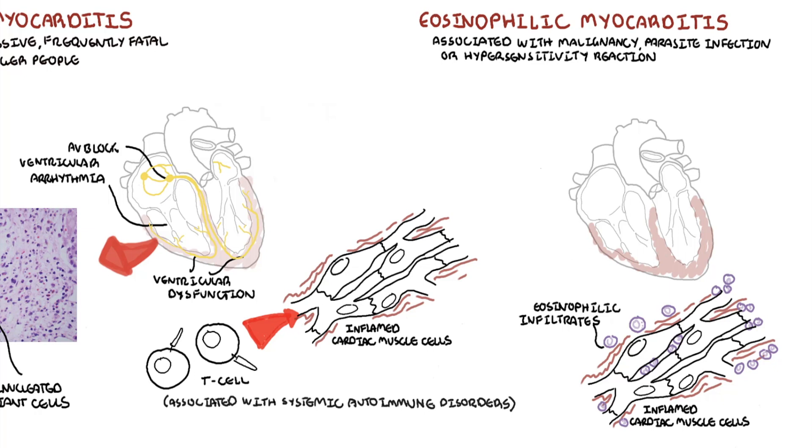Eosinophilic myocarditis is fatal and presents with sudden death or rapidly progressive heart failure, usually with a rash, fevers, and peripheral eosinophilia.